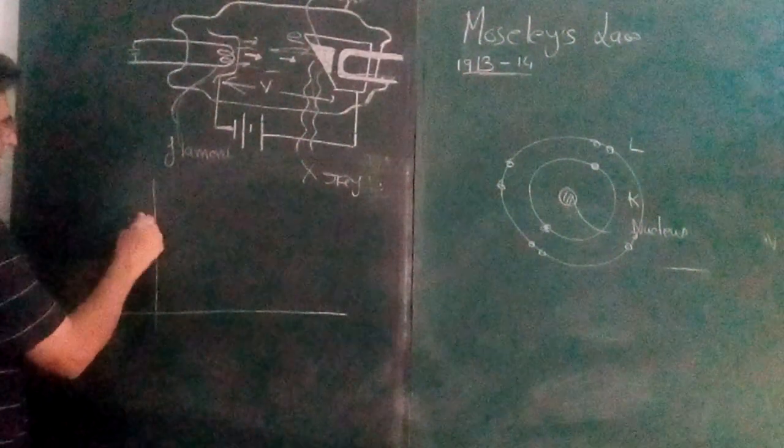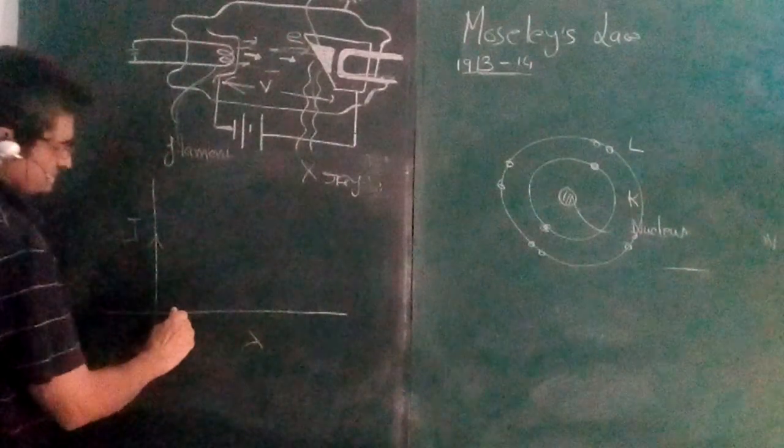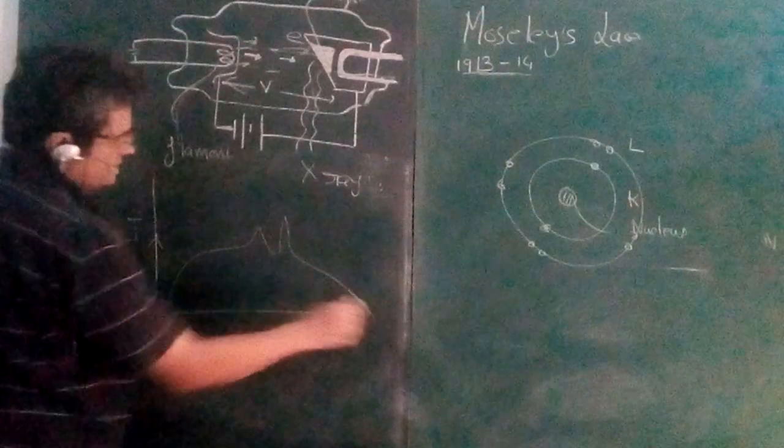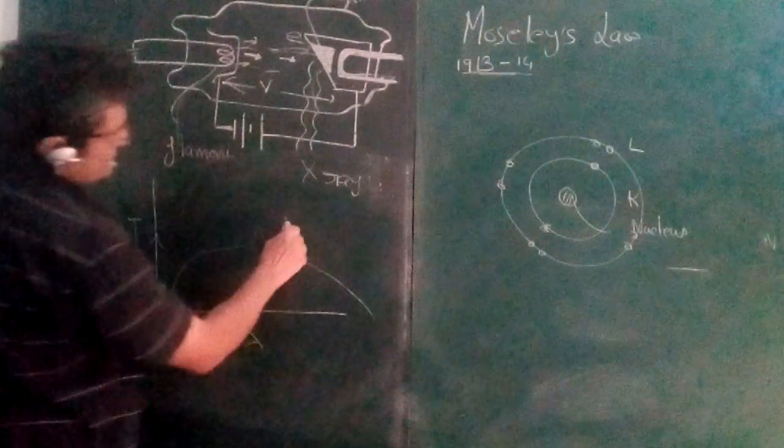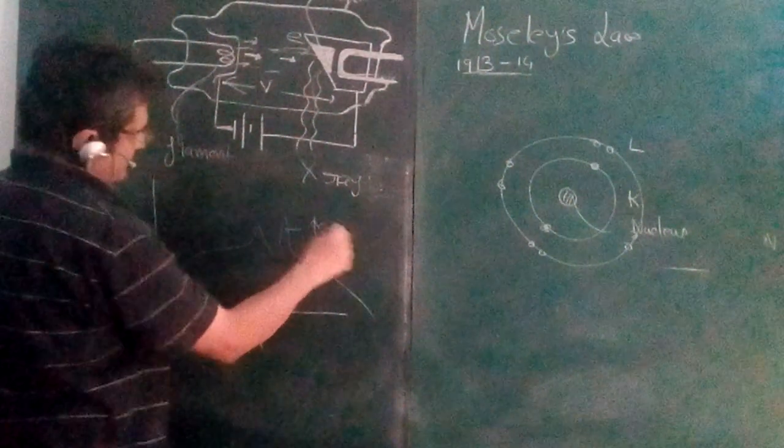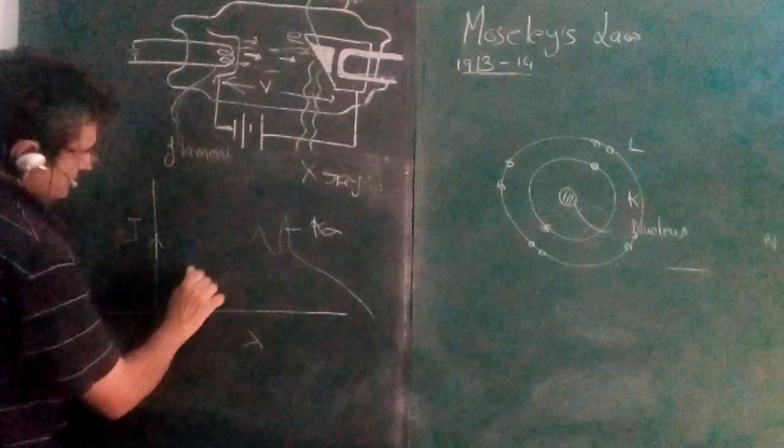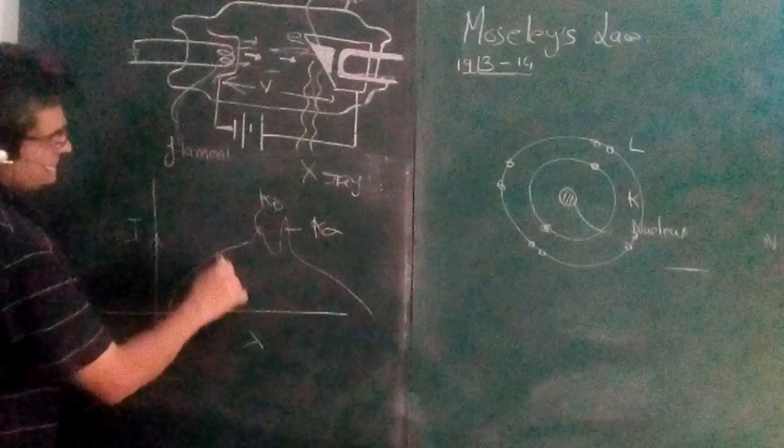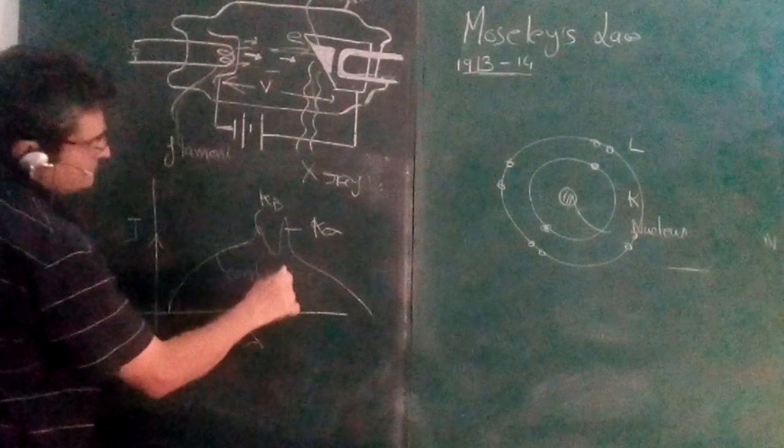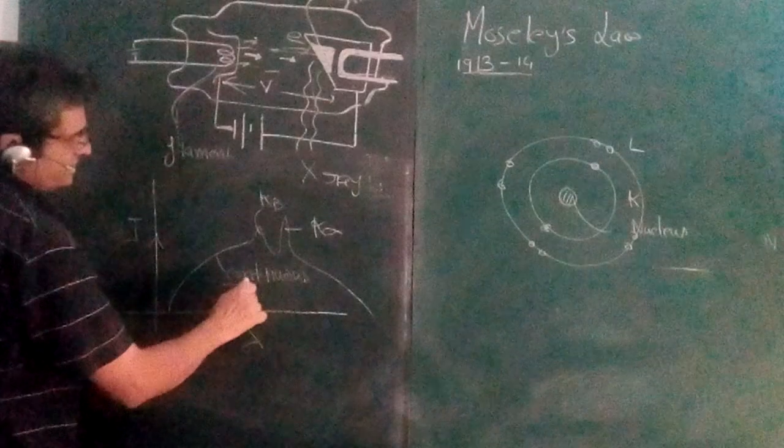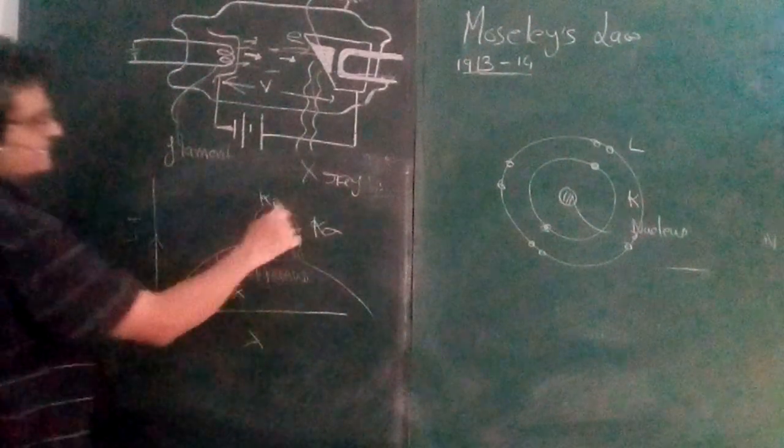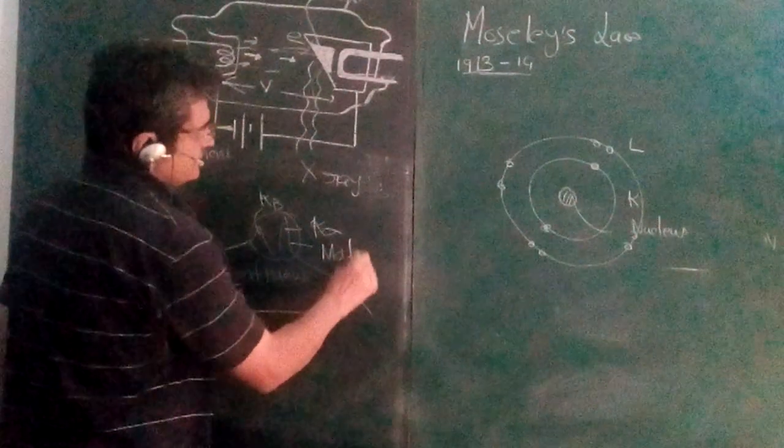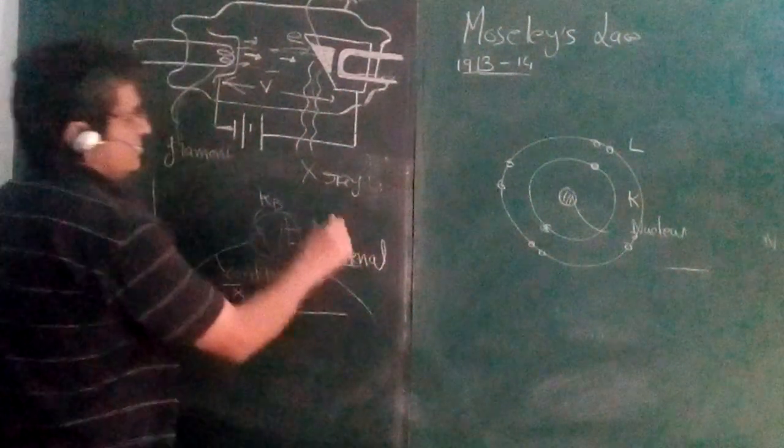If this is the intensity and this is wavelength, you get this kind of a graph. Something like this, and this is the K alpha line. It will be slightly like this - this is K beta. This is continuous spectra X-ray and this is characteristic. This is dependent on the material used.